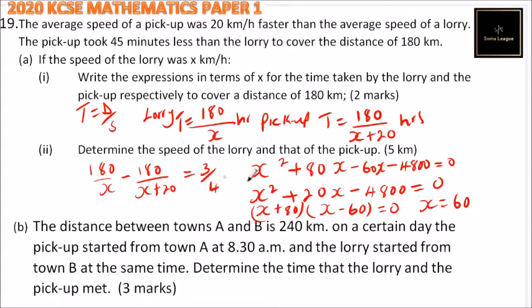It means x is equals to 60. So we can put it here. It means the lorry was 60 kilometers per hour. You can write that properly, 60 kilometers per hour.